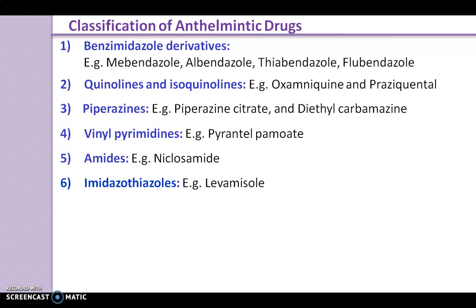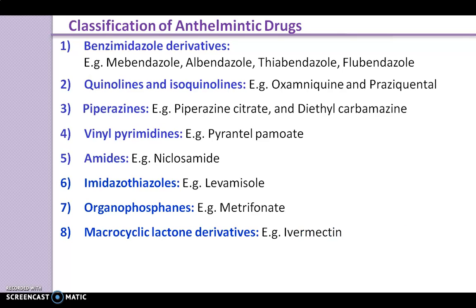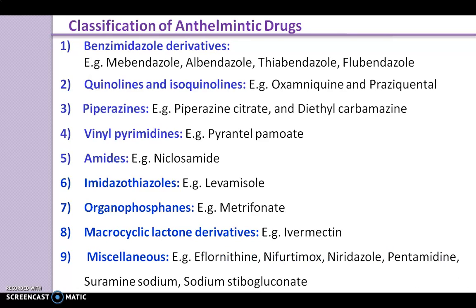Next one is imidazothiazoles. Example is levamisole. Next one is organophosphates. Example is metrifonate. Next one is ivermectin. And last one is miscellaneous. Examples are eflornithine, nifurtimox, niridazole, pentamidine, suramin sodium, and sodium stibogluconate. These are all the chemical classifications of anthelmintic drugs.